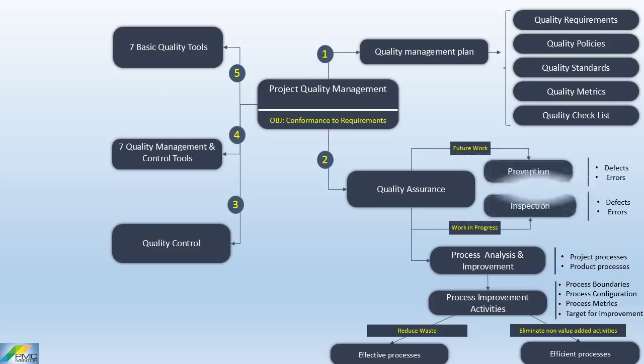Prevention of defects and errors is the objective for work that is planned in future, while the inspection technique helps to identify any defects and errors for work in progress. Quality audits is a structured, independent process used to determine if the project activities comply with organizational quality policies, processes, and procedures.